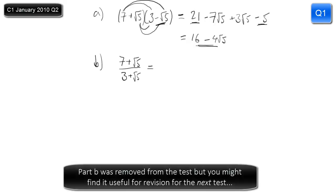Now for part B, we have this fraction here and we have to express it in the form a plus b root 5. So basically we need to get rid of this denominator — get rid of the 3 plus root 5 — by rationalizing the denominator. The process is to look at what we've got on the bottom and think what could we multiply that by so that the whole thing would become a rational number. We've got 3 plus root 5, so using the difference of two squares, if you multiply it by 3 minus root 5, that's the trick that we need.